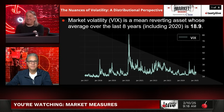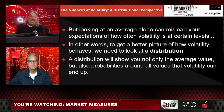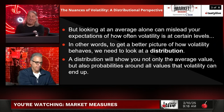At some point it will go back. Looking at an average alone can mislead your expectations of how often volatility is at certain levels. To get a better picture of how volatility behaves, we need to look at its distribution. A distribution will show you not only the average value but also the probabilities around all values that volatility can end up with.